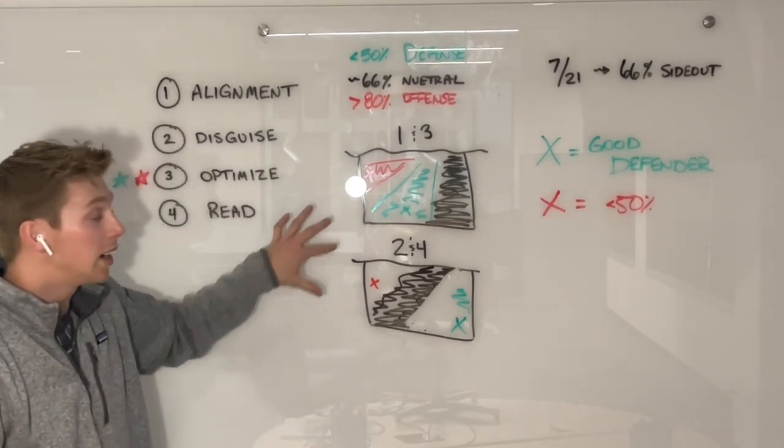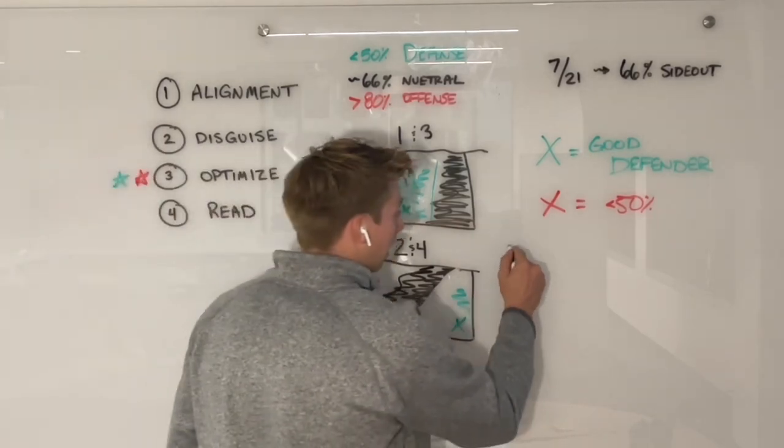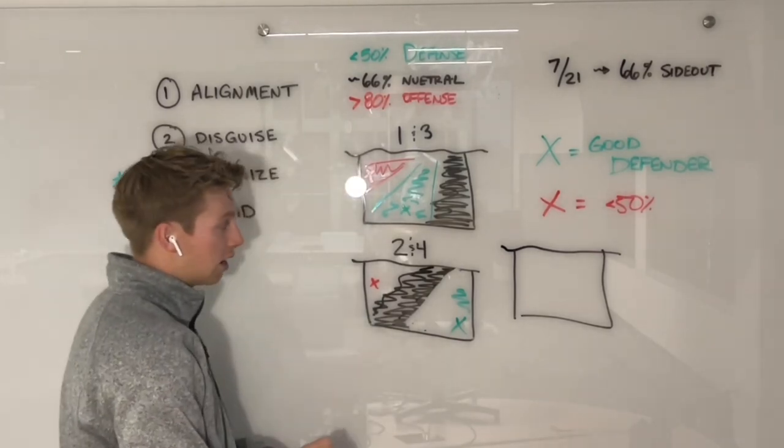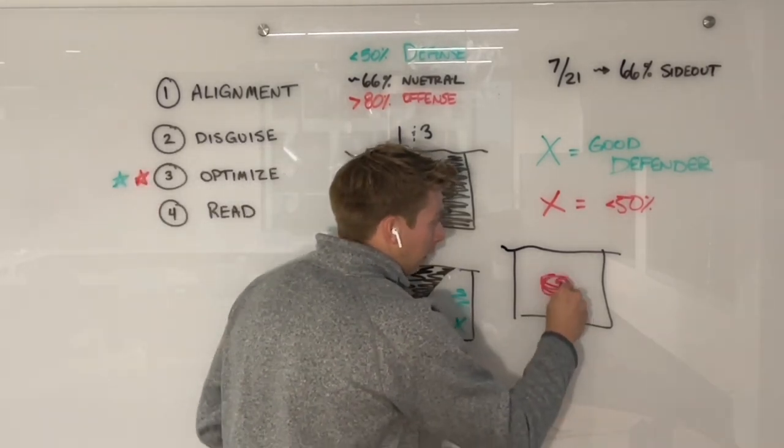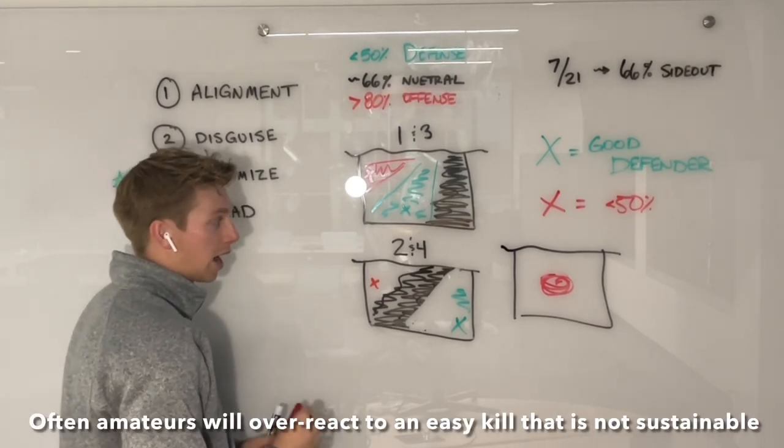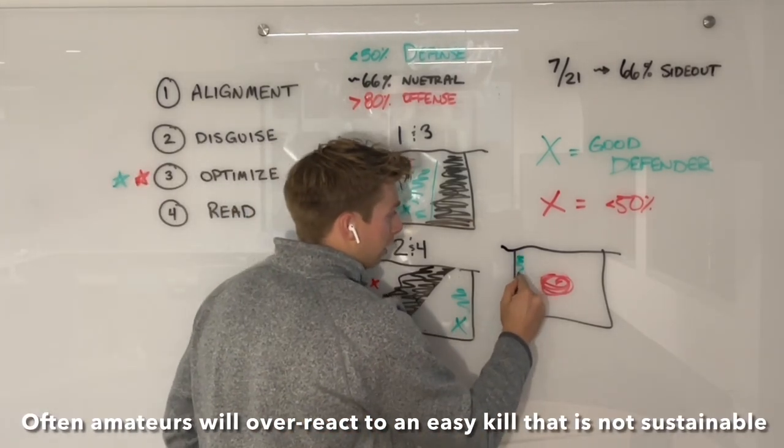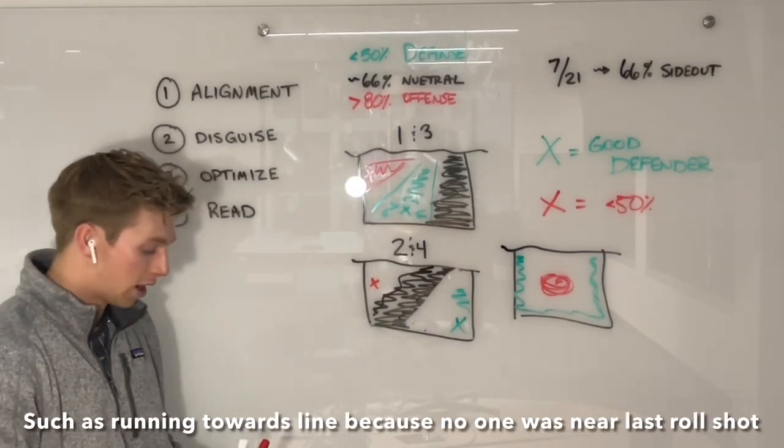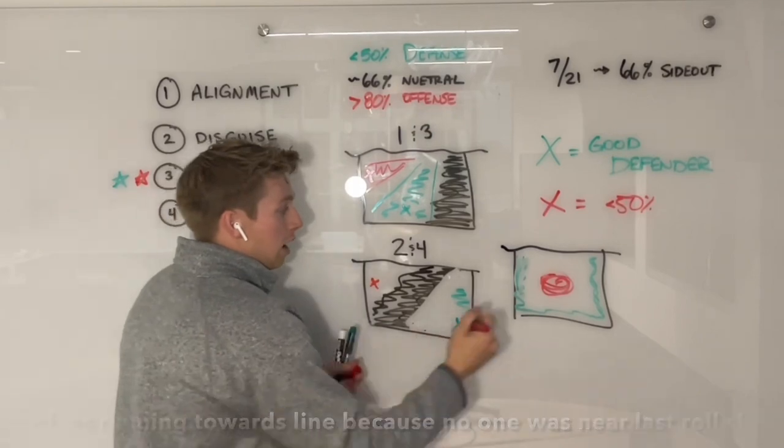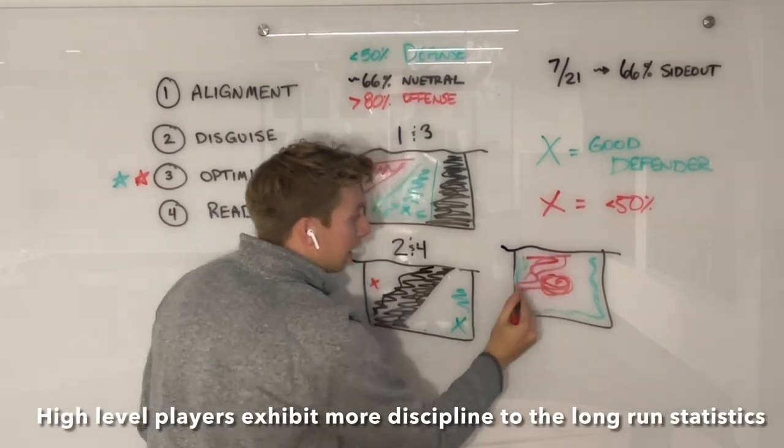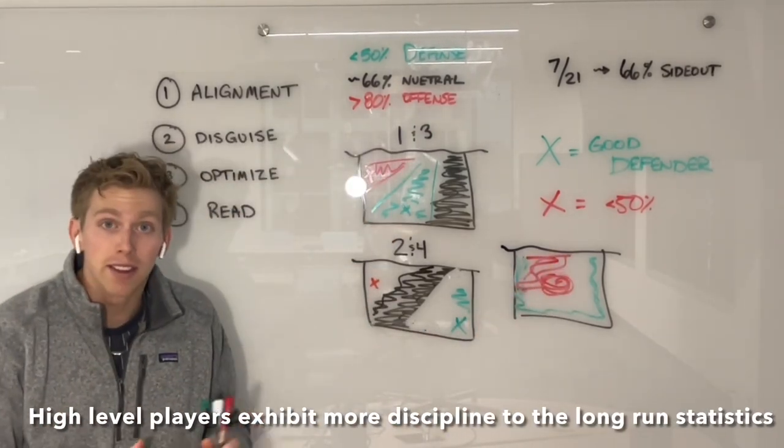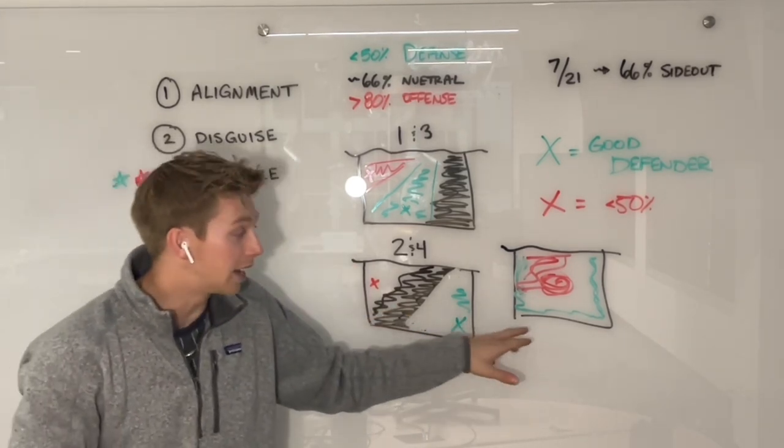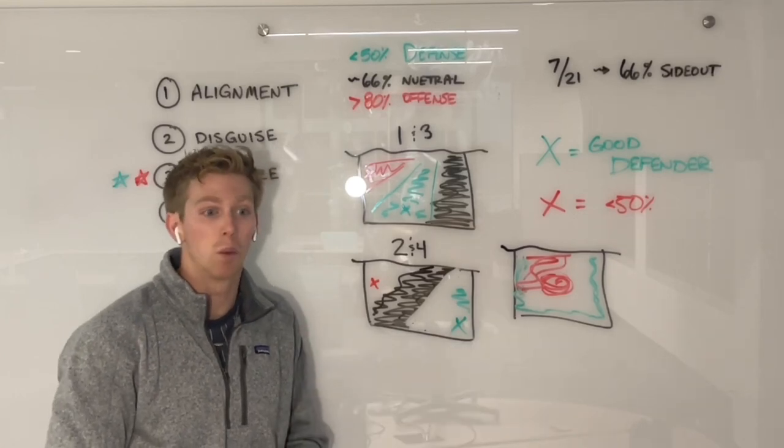Now this is great if people's shot charts were exactly even. Let's say the spray chart of the hitter was in the meat of the court, was good for the offense, and if they swing towards the sidelines, it's good for the defense. But this isn't realistic. This isn't your average hitter. Some hitters are strong on the angle. Other hitters are strong on the line.